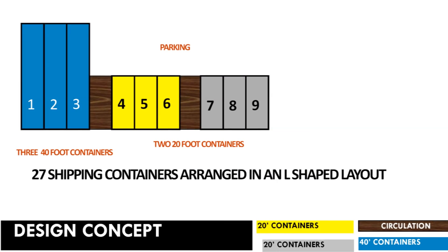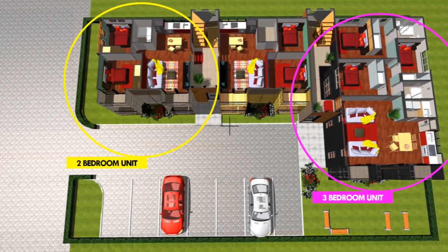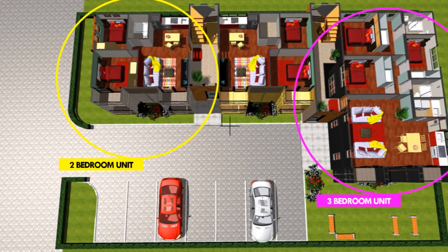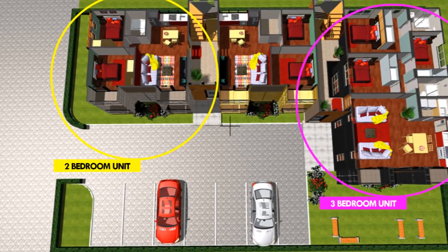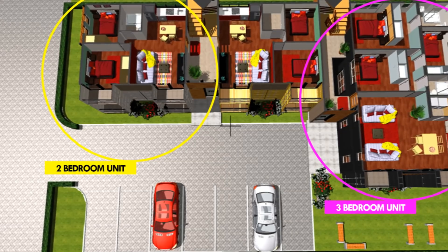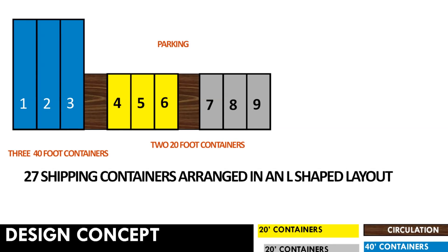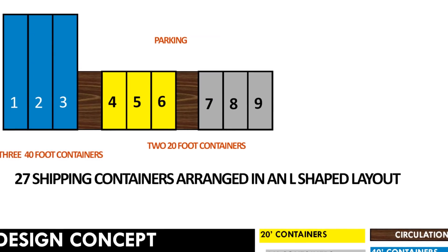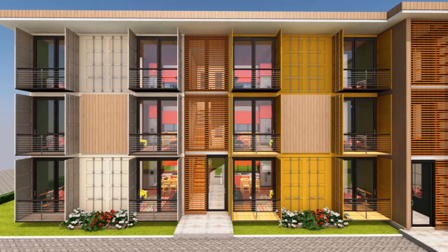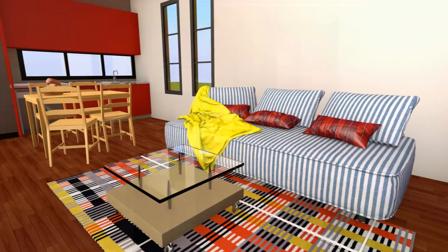This modern shipping container apartment block is formed by combining two two-bedroom housing units, each designed using three 20-foot shipping containers. In addition, there is a three-bedroom housing unit designed from three 40-foot shipping containers, joined together with two staircase shafts to form an L-shaped floor plan. This video will highlight the design brief of each typology, along with 3D floor plans of each housing unit.